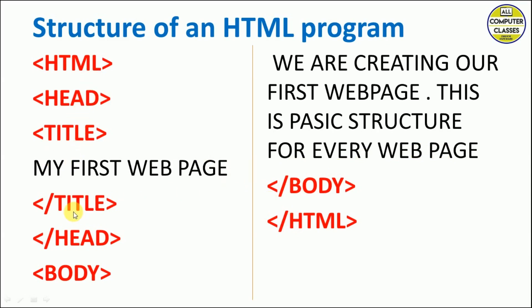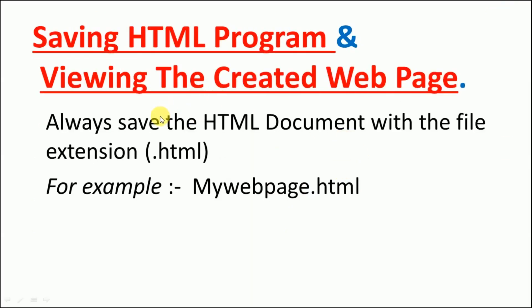So the structure is: HTML, head, title — write the title, close the title, close the head tag — then body, give some text in the body, close the body tag, and close the HTML. This is the basic structure that every HTML program will have. When saving an HTML program, we always use dot HTML as the file extension. For example: my web page dot html.